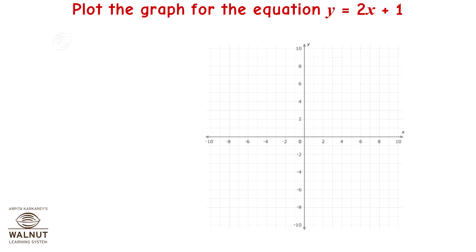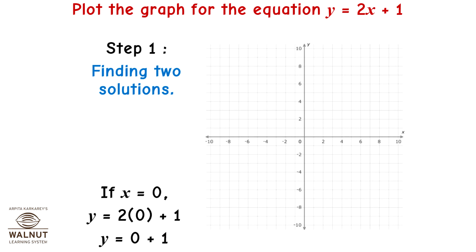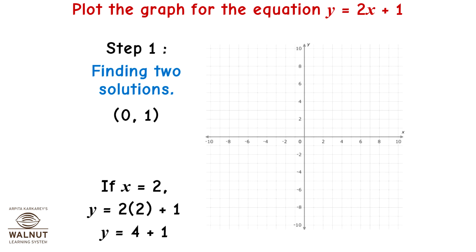Plot the graph for the equation y = 2x + 1. Step 1: Finding two solutions. If x = 0, then y = 2(0) + 1 = 1, giving coordinates (0, 1). If x = 2, then y = 2(2) + 1 = 5, giving coordinates (2, 5).